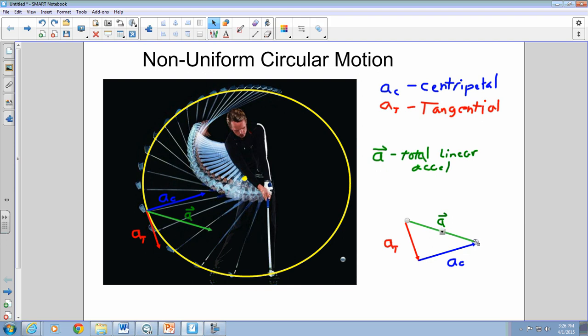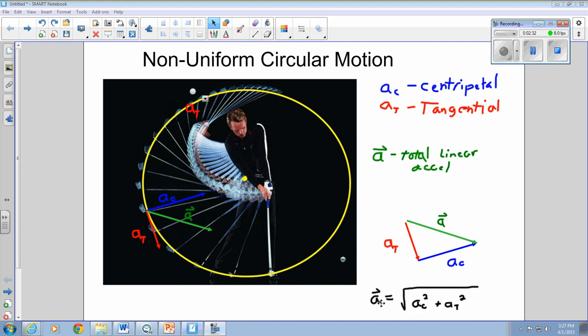It doesn't matter for the purposes of calculating the total linear acceleration, but you'll see when we're trying to get the angle, what angle we are interested. In order to calculate the total linear acceleration, it's the Pythagorean theorem. Centripetal acceleration squared plus tangential acceleration squared, take the square root. That's going to give us the total linear acceleration.